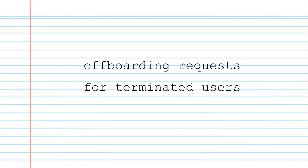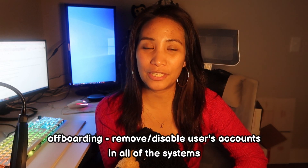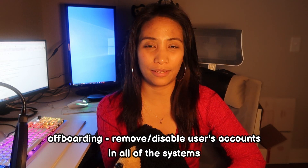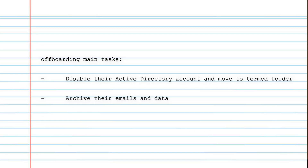For our last ticket, I got a few offboarding requests for terminated users. Offboarding is one of the most common tasks in IT — it means removing and disabling user accounts across all systems, networks, and programs the company uses. Offboarding can differ from company to company, but the main actions are: disable their Active Directory account and move it to the termed folder or group, archive their emails and data, and remove, disable, or delete accounts from all systems.